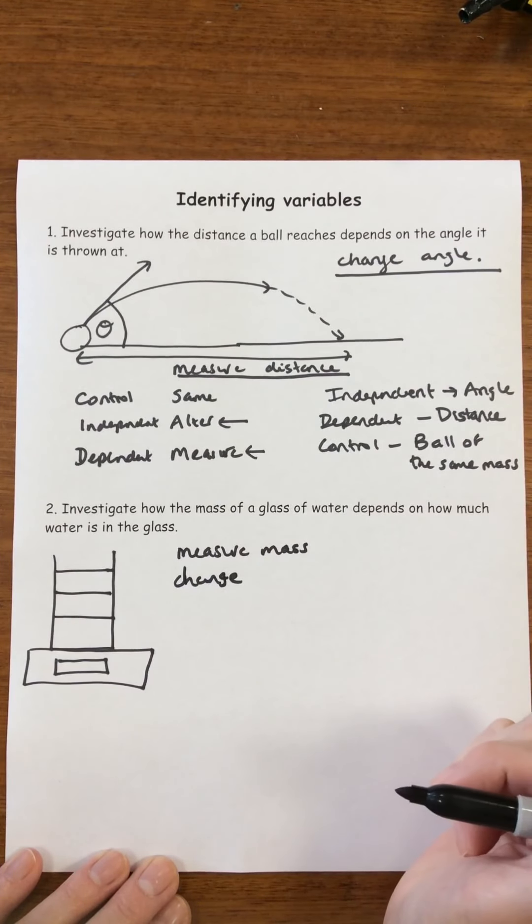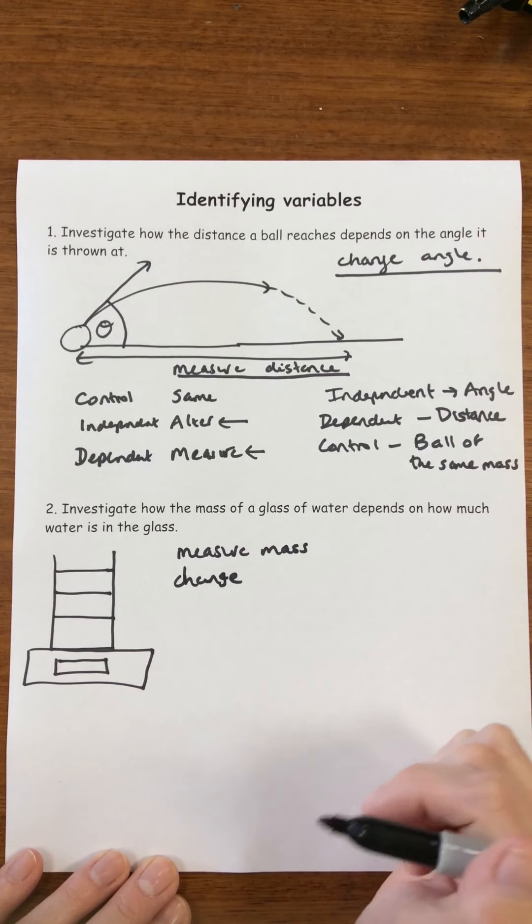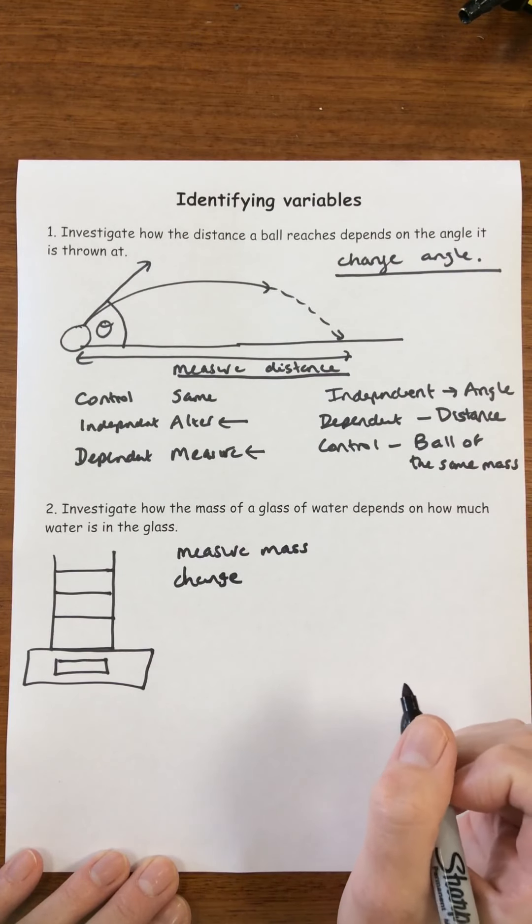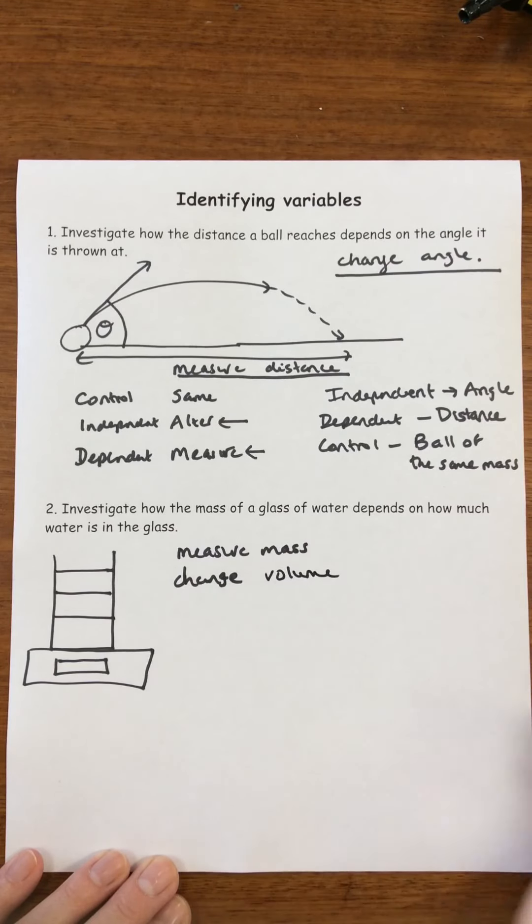But how much water isn't really a variable, it's not a proper scientific name. So the name we give to how much water we have and how we measure the amount of water is volume.